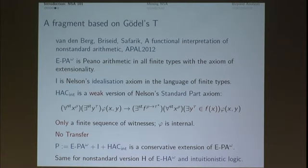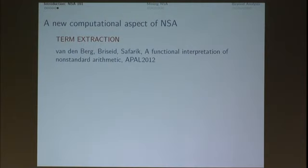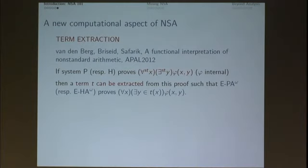Now comes the new stuff: a new computational aspect of non-standard analysis. Two words to remember: term extraction. If system P proves for all standard, there exists standard, from this proof we can extract a term T, such that the system proves for all, there exists, and that there exists is witnessed by T, where T is this herbrand witness, a finite sequence of witnesses. This should be compared to the Gödel-Gentzen or Friedman translation for pi-0-2 formulas: if Peano arithmetic proves some pi-0-2 formula using classical logic, then from this proof one can extract a term such that HA-omega proves for all N, phi(N, T(N)).